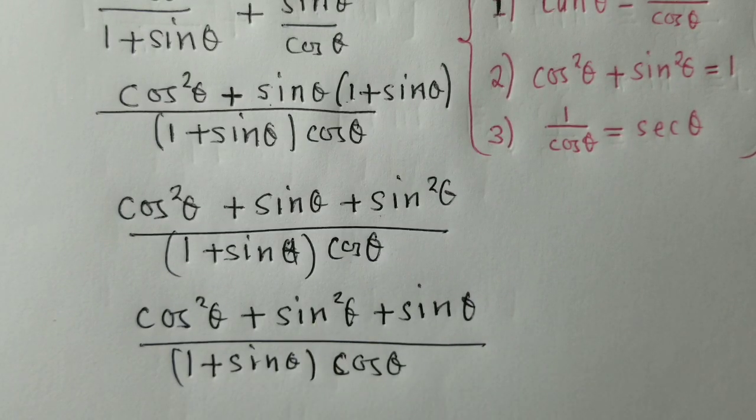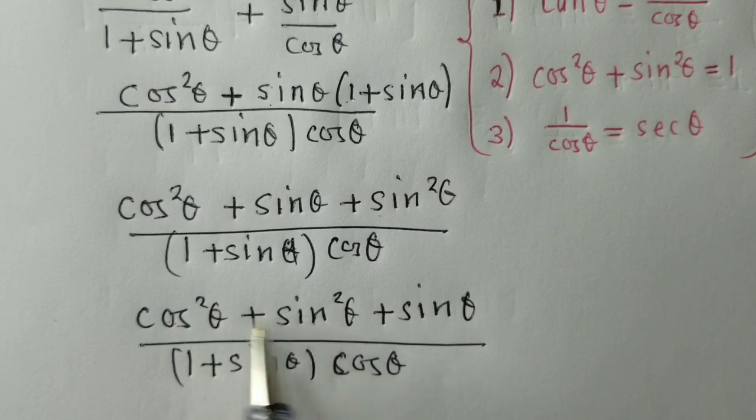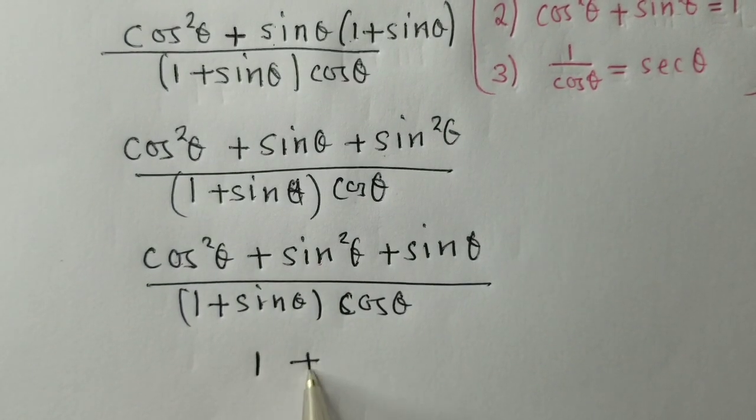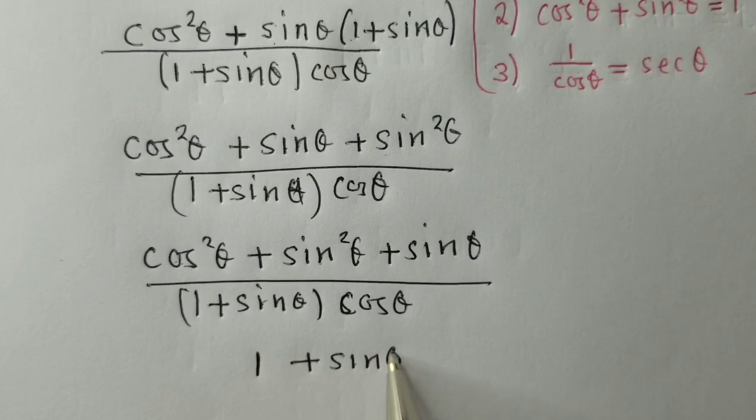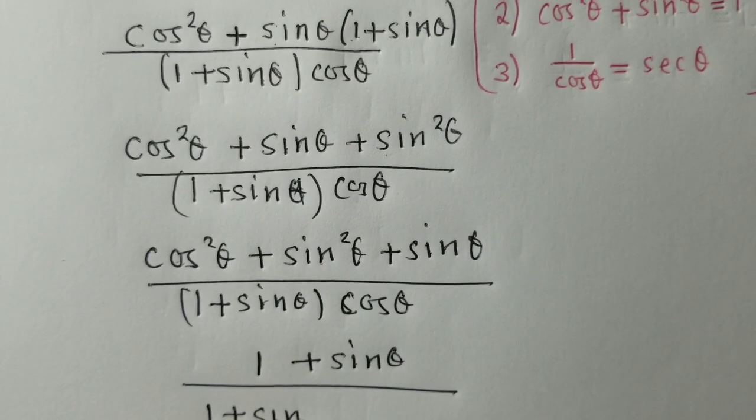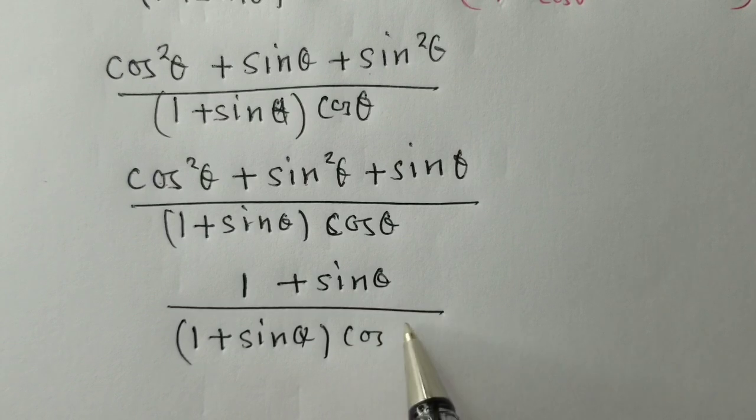Now, if you can see nicely, there is an identity here, which is identity 2. You see identity 2? This is equal to 1. So, we shall say 1 plus sin theta over 1 plus sin theta, cos theta.